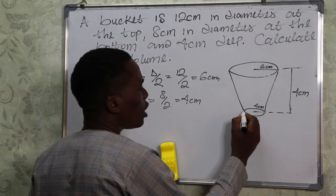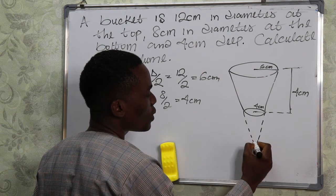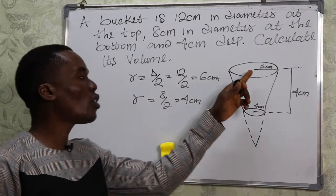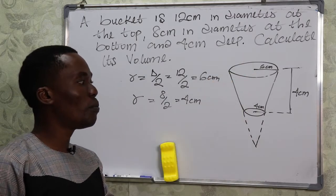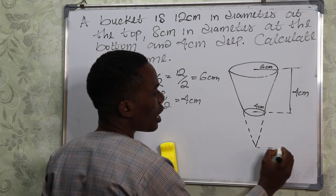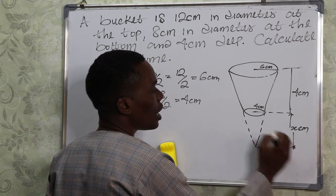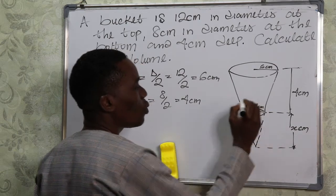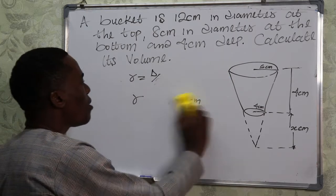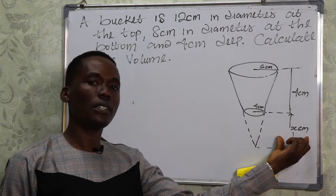This bucket shape is going to be treated as a cone — we extend it to make a full cone in order to solve the question appropriately. With this extension we now have a full cone and then a smaller cone inside. We take the height of this smaller cone to be x centimeters, and the radius of the smaller cone is 4 centimeters.